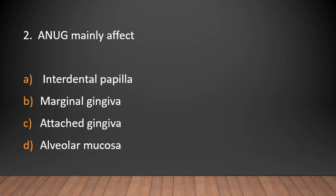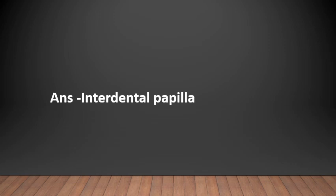MCQ 2: ANUG mainly affects — interdental papillae, marginal gingiva, attached gingiva, or alveolar mucosa? Answer: Interdental papillae. ANUG mainly affects the interdental papillae, then it extends to the marginal gingiva.